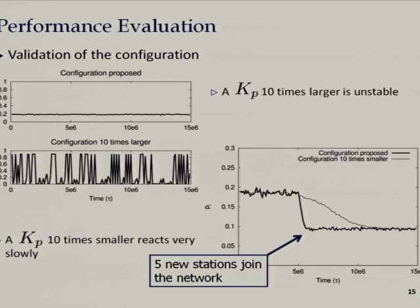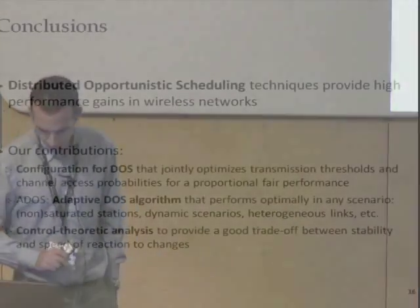The performance of the system is quite sensitive to the KP parameter. Setting it 10 times larger makes the system unstable, as visible in the access probability oscillations. Setting it 10 times smaller makes the system react very slowly to changes. It's really necessary — and not easy — to find the good tradeoff between reaction to changes and stability, and control theory helps quite a bit here.